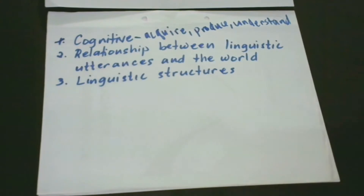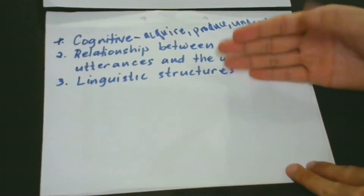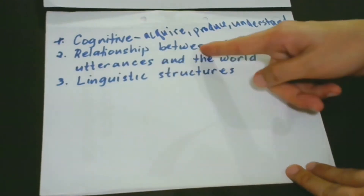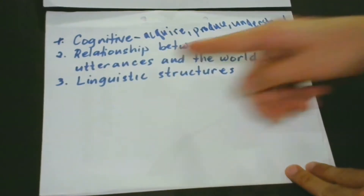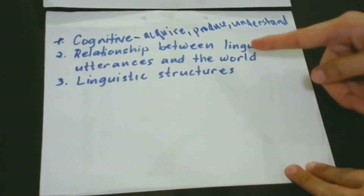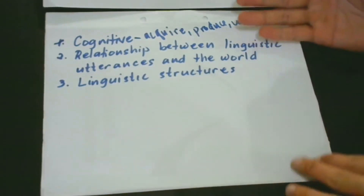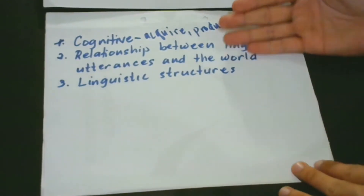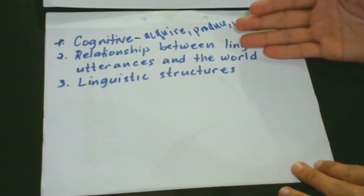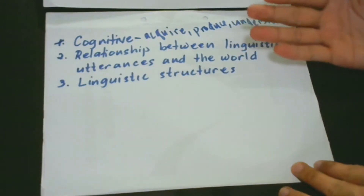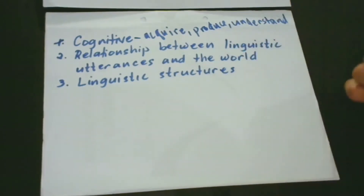The second aspect is the relationship between linguistic utterance and the world. What this means is how we use natural language to express what we think and what we feel in connection to the experiences we have with the world.